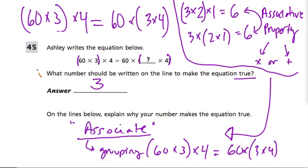Now let's go right to this. It says: what number should be written on the line to make the equation true? I said the answer is 3. But I want to explain why. When they say 'make the equation true,' you might not realize this, but this equal sign right here is telling you that this side of the equation is equal to this one.